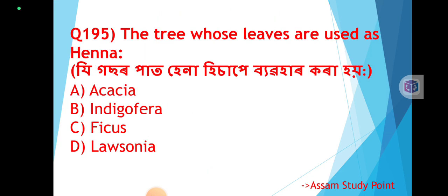Question 195: The tree whose leaves are used as Henna — zi gosar path hena isa vebar gara hoy. The correct answer is Option D: Lawsonia (Loss of Nia).